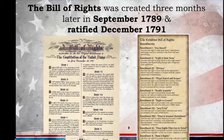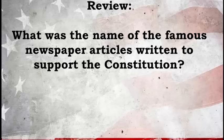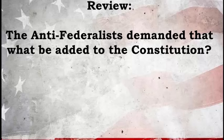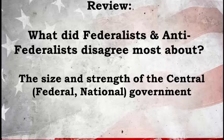Let's review. Who was against ratifying the Constitution? They liked things the way they were under the Articles — yes, the Anti-Federalists. What was the name of the famous newspaper articles written in favor of the new Constitution, mostly written by James Madison? Yes — the Federalist Papers. What did the Anti-Federalists insist be added to the new Constitution? That's easy — a Bill of Rights. Here's a tough one: what did Federalists and Anti-Federalists disagree most about? It was the size and strength of the central government — that was their big disagreement, and all the other issues went along with that.